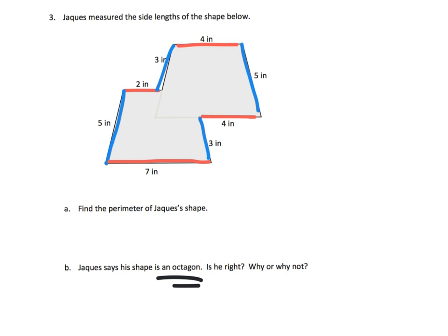Well, what's an octagon? Well, the octagon is an eight—like the word octopus—is an eight-sided shape. So does this have eight sides? Yes it does, it has eight sides. So I would say hey, Jaques is correct. It is an octagon. It's not your classic looking octagon, but it is definitely an octagon.